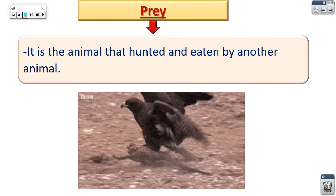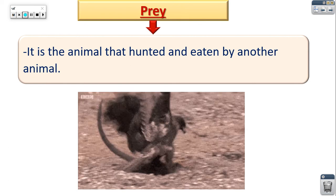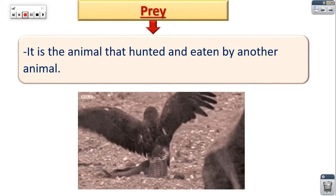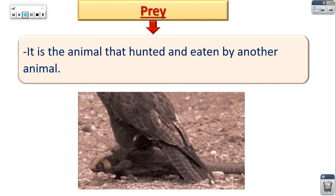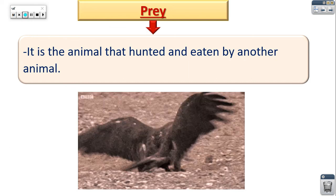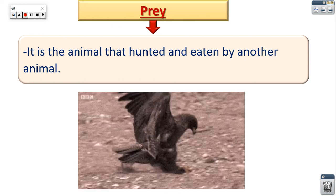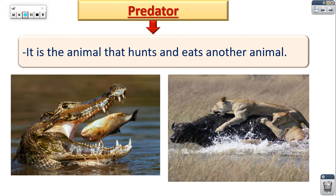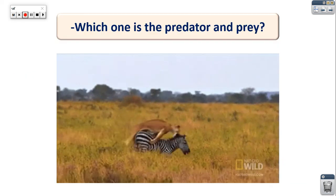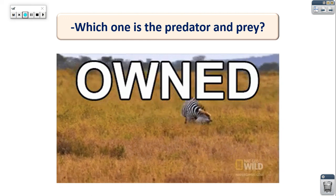There are two types of living organisms called prey and predator. Prey is the animal that is hunted and eaten by other animals — for example, the lizard here is the prey, attacked and eaten by the hawk. The predator is the animal that hunts and eats other animals, like crocodiles and lions. Which one is the predator? The lion. Which one is the prey? The zebra.